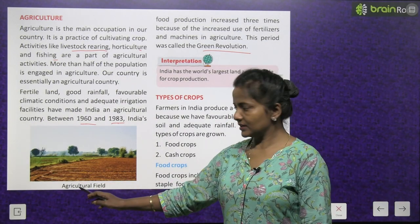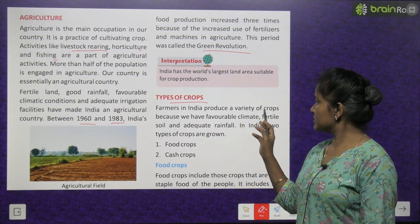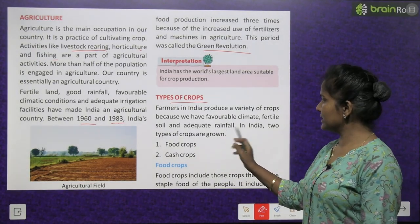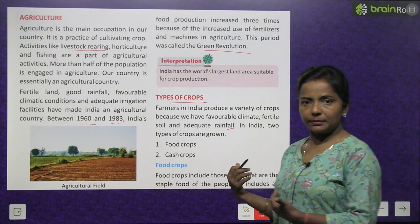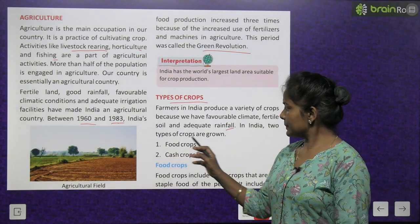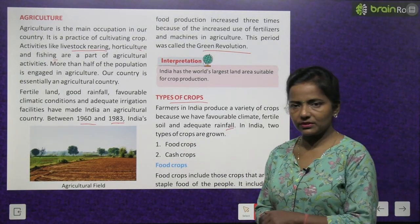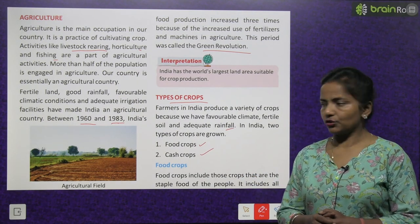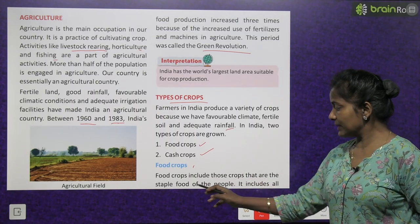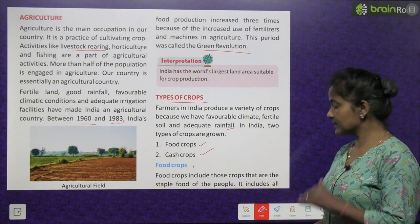Types of crops: farmers in India produce a variety of crops because we have a favorable climate, fertile soil and adequate rainfall. Two types of crops are grown in India: food crops and cash crops. Food crops include those crops that are the staple food of the people.